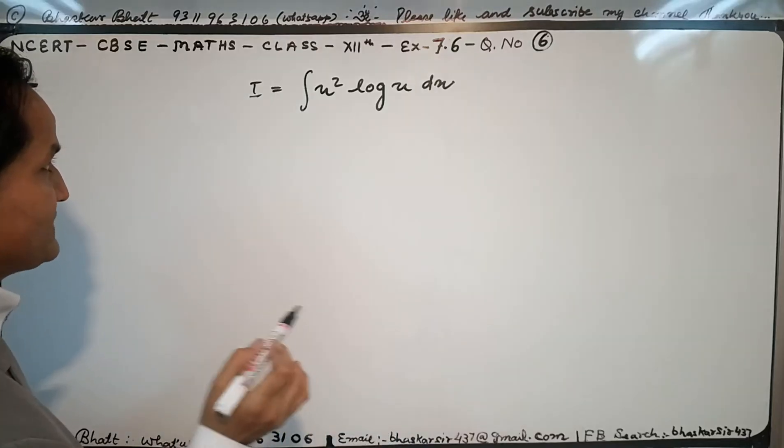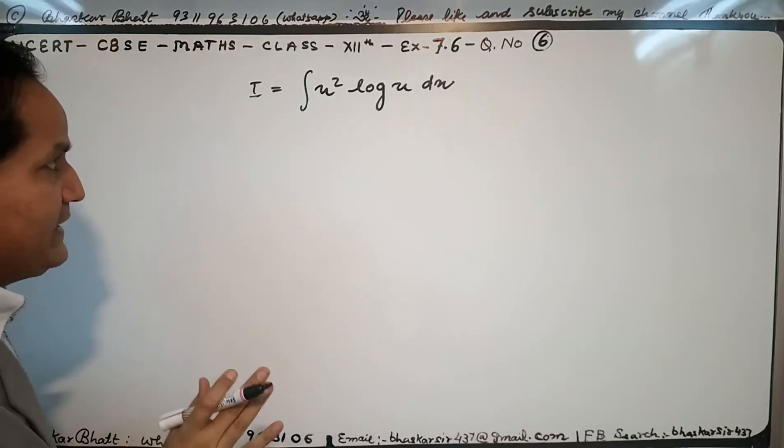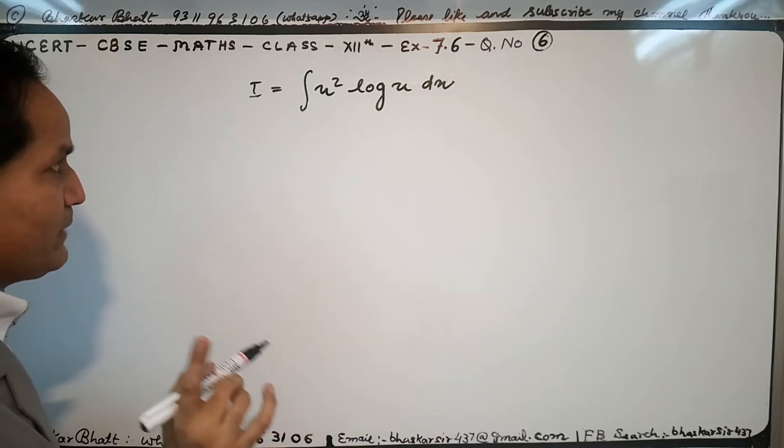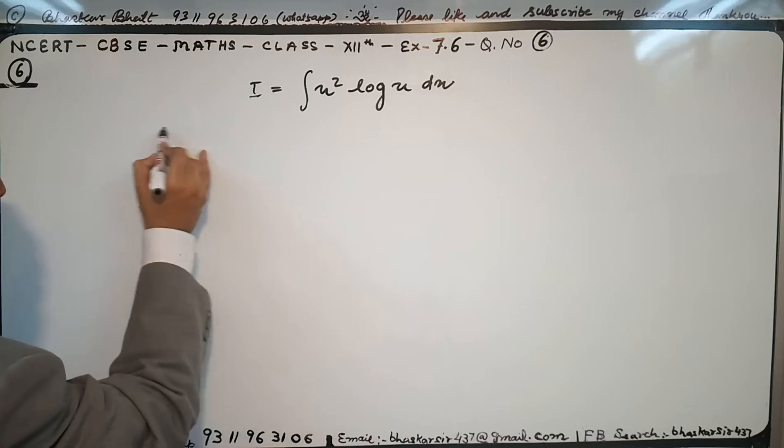We have question 6 of exercise 7.6: x square log x, which we need to integrate. We know we are using here the technique of integration by parts. You know the formula.